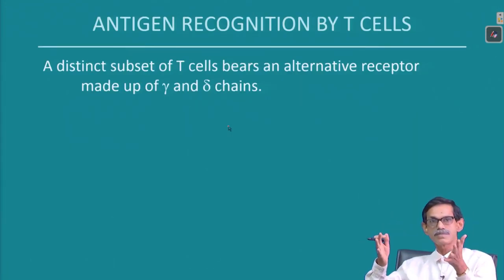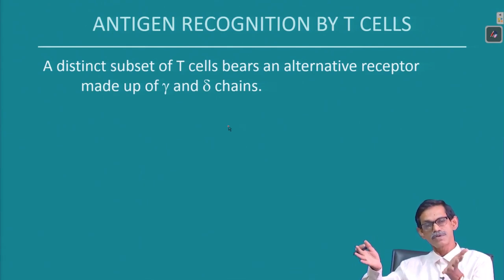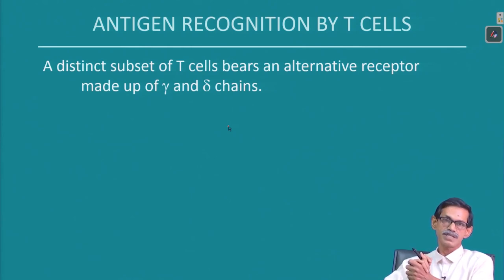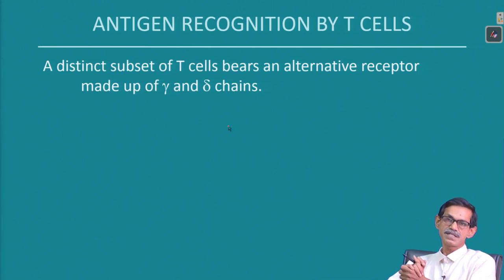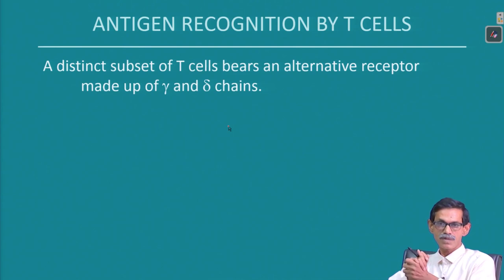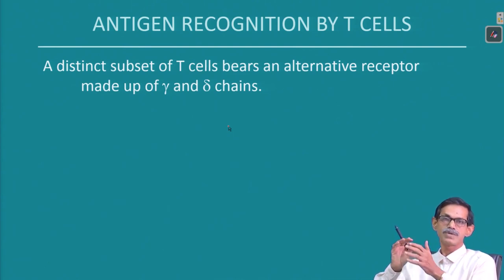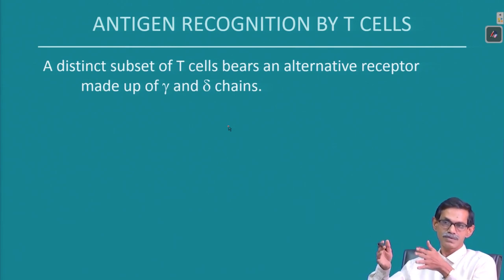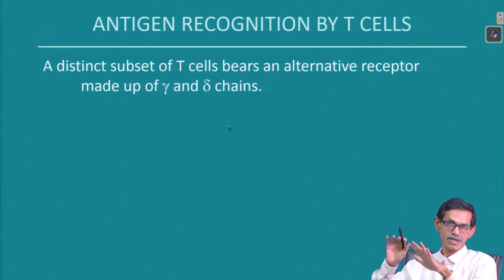In most immunology books and in the whole immune system discussion, we mostly talk about alpha and beta type of T cell receptor. Gamma and delta T cell receptors are not as well known — we know they exist and know some of their functions, but not much research has been done and not much is included in basic textbooks.